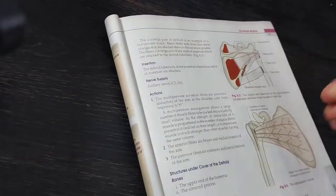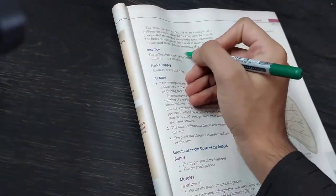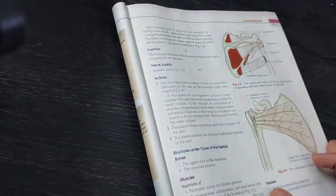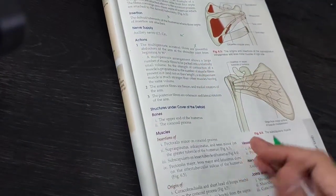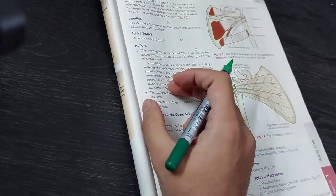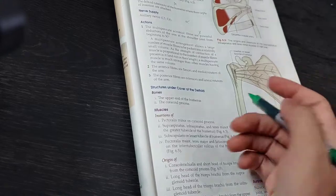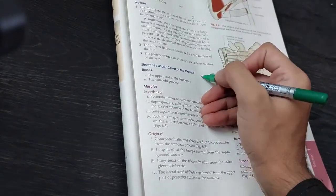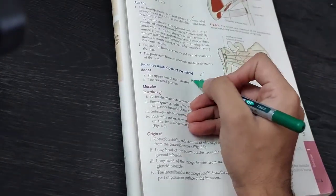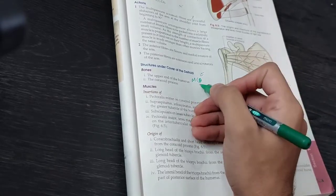And these paragraphs you don't have to do. You have to insert the deltoids. Deltoid action is very important. Structures under the cover of deltoids, you can do it. Here you can write MCQs. Which are bones under the cover of the deltoids? Muscles?